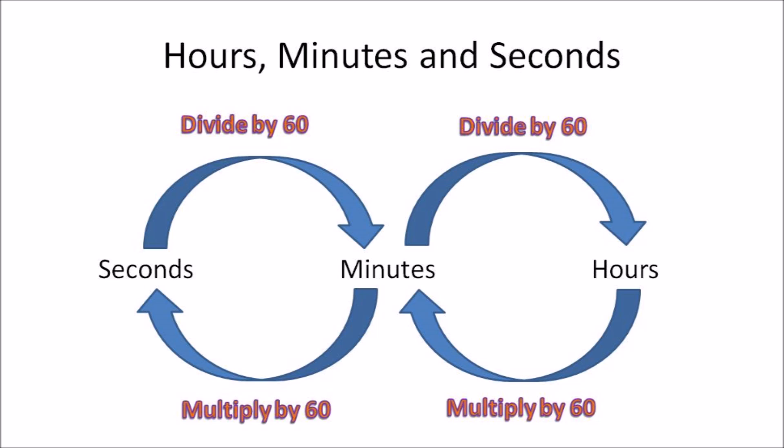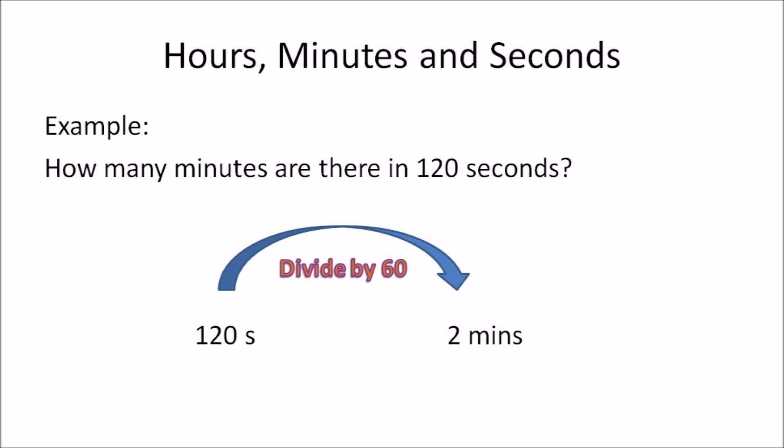If you have to convert seconds to minutes, you need to divide by 60. If you have to convert minutes to hours, you need to divide by 60. If you have to go back and convert hours to minutes, you need to multiply by 60. And if you have to convert minutes back to seconds, you need to multiply by 60.